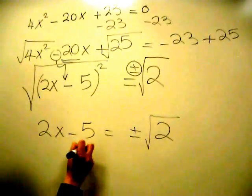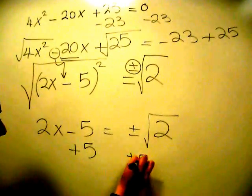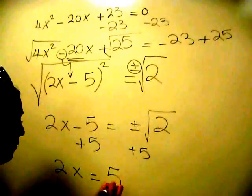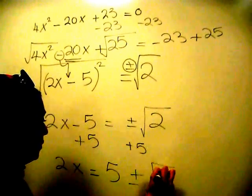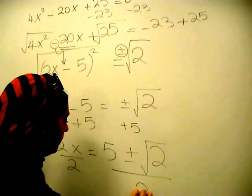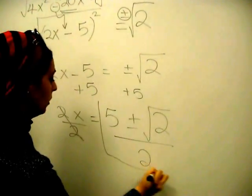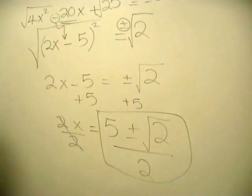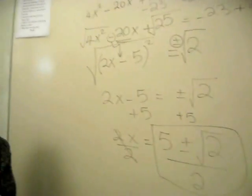By adding 5 to each side, I would get 2x = 5 ± √2. And then by dividing by 2, x should equal that. And that's how you get your answer.